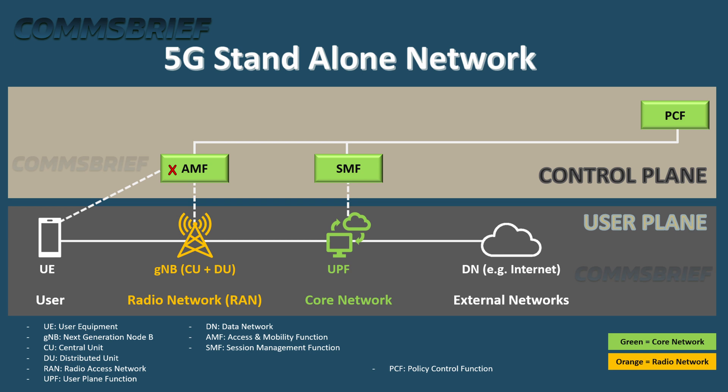AMF, or Access and Mobility Management Function, is part of the control plane. It is connected to the gNB and it provides access and authentication. The Network Slice Selection Function, NSSF, determines which AMF or AMFs can serve a particular UE based on the service type the UE is trying to access. UE means the phone — it stands for User Equipment.